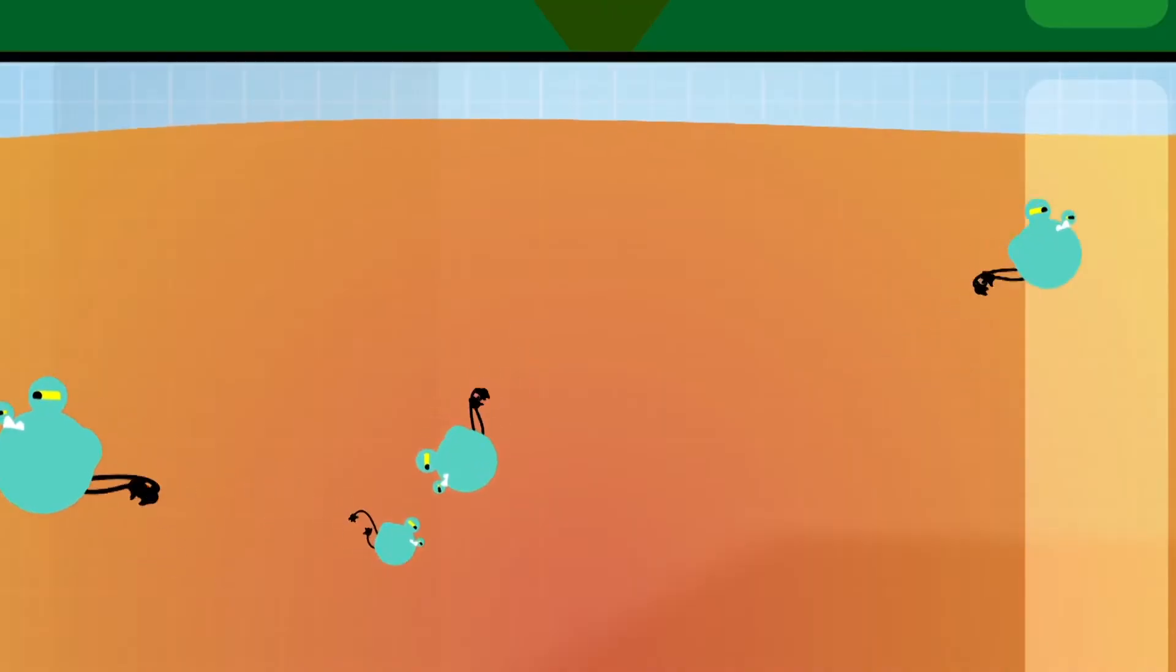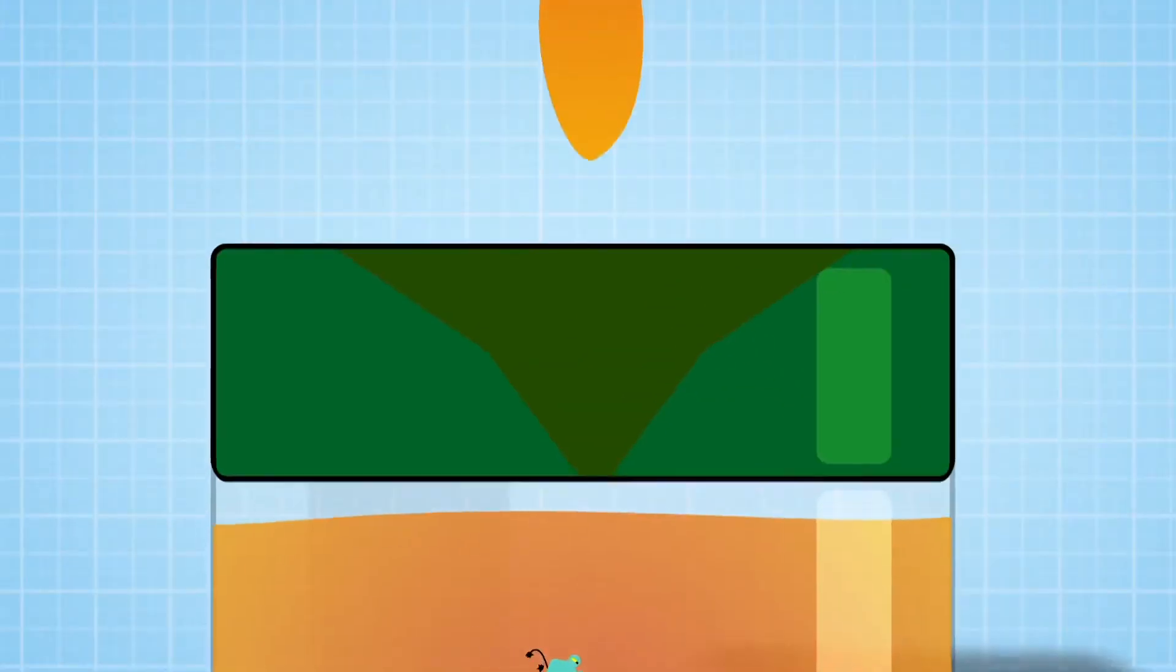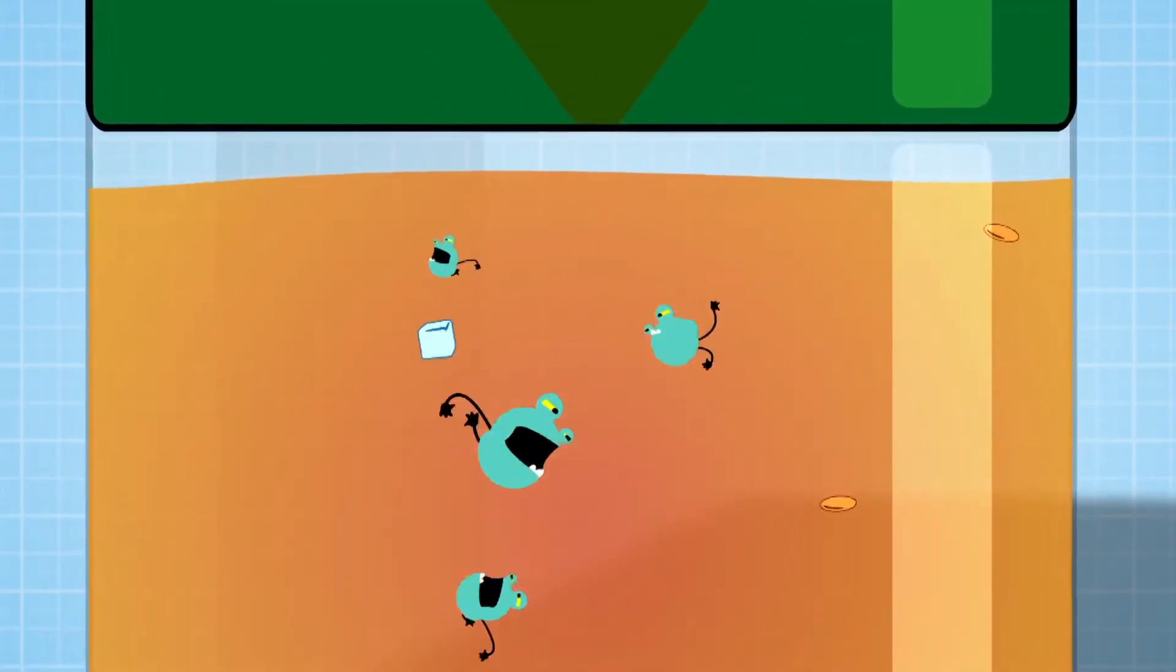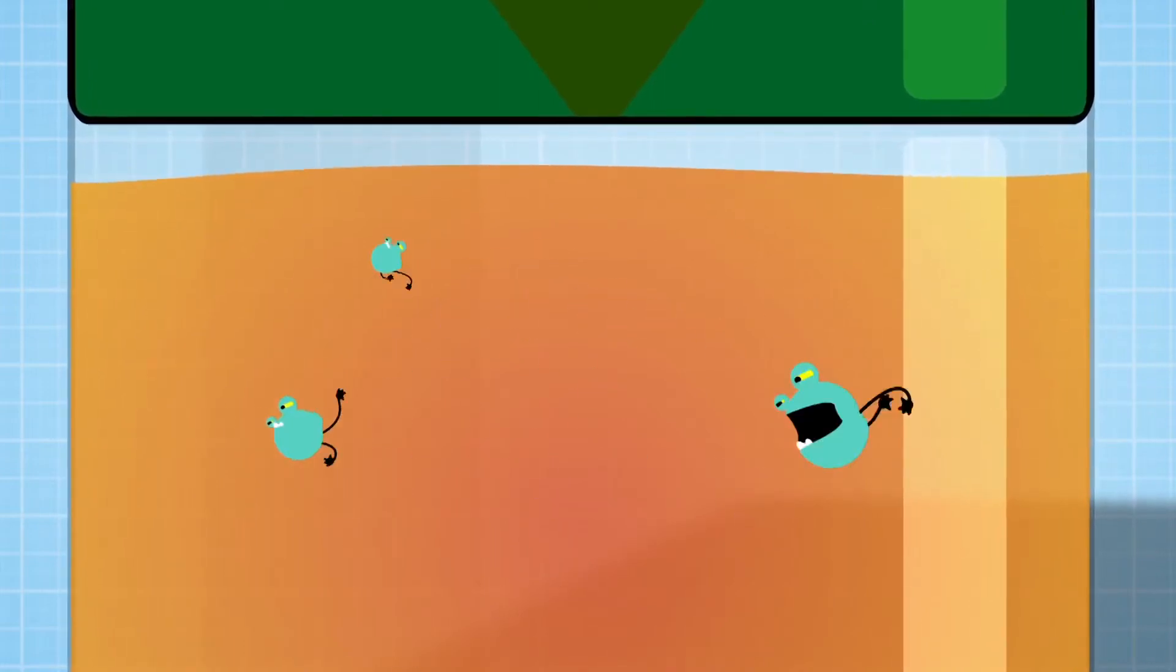The bugs living in the microbial fuel cells, or batteries, feed on the sugars and proteins in urine, breaking it down, and this process creates electricity.